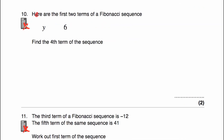Question number 10 says here are the first two terms of a Fibonacci sequence. We've got y and 6, and we've been asked to find the fourth term of the sequence — not the third, but the fourth term. So to get the third term, we would do y plus 6, which is just y plus 6 since we don't know the value of y. And then to get our fourth term, we're going to add the second term and the third term: 6 and y plus 6. So 6 plus 6 is 12, and we've also got y. So the fourth term in the sequence would be y plus 12.